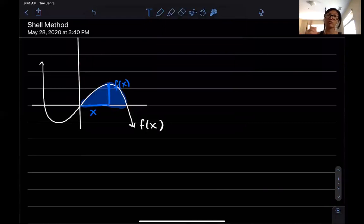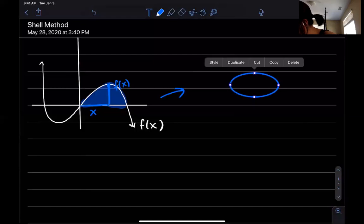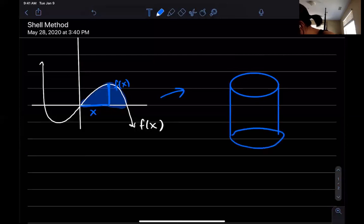I take that and just rotate that around the y-axis. What do I get? You get a cylinder. So what I'm gonna get is something that looks like this. It's gonna be a cylinder.